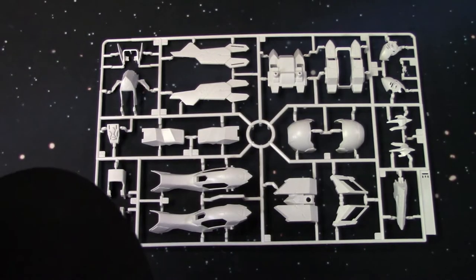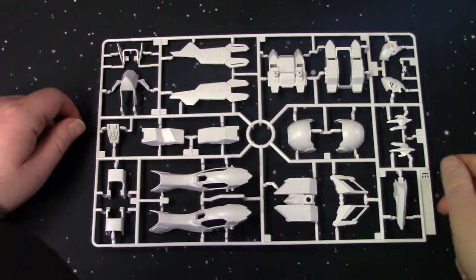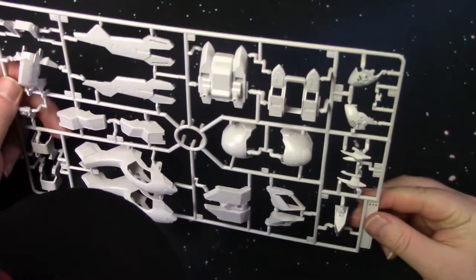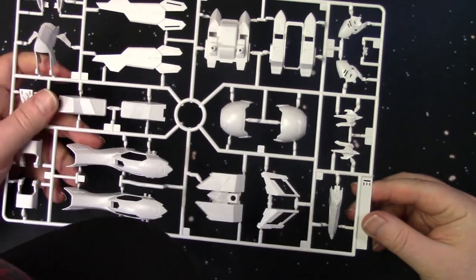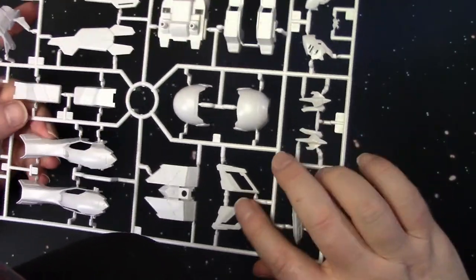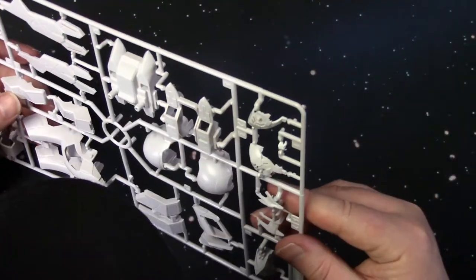There we have the E sprue. And this is one of the two sprues that have all the white pieces. So you've got the legs, the arm covers, the backpack, shoulders. Inside of the chest there. Oh no, that's the backpack. I apologize.